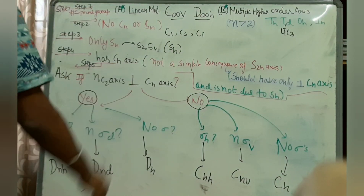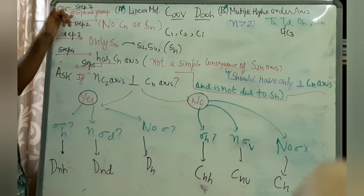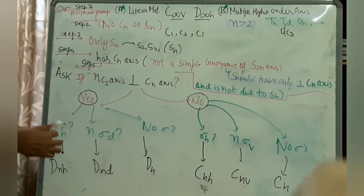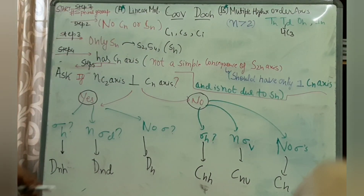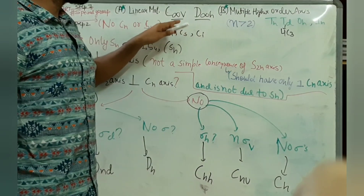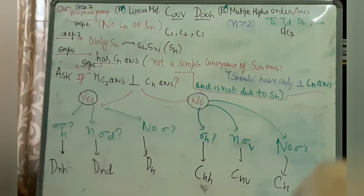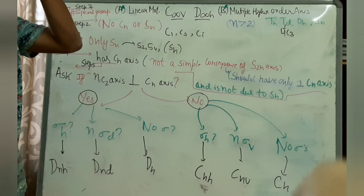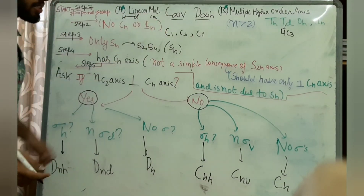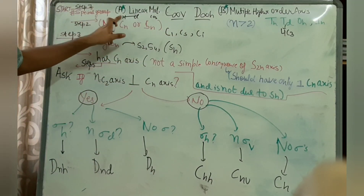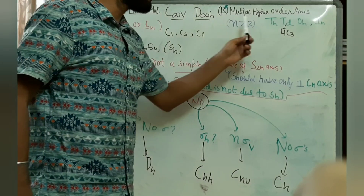Let's start. The first step is you take your molecule and check if it belongs to something called the special group. There are two types: one is the linear molecule, and second is the multiple higher-order axis molecule. For a linear molecule, you should have something like C∞v or D∞h. Linear molecules — like HCl or CO2 — can have a point group of C∞v or D∞h.